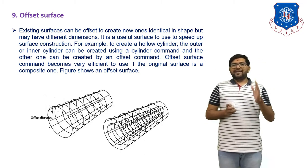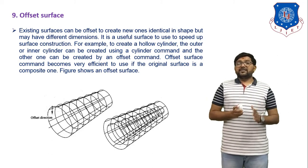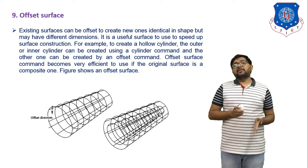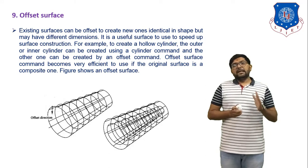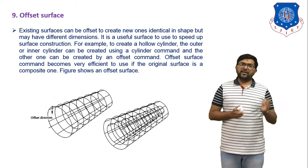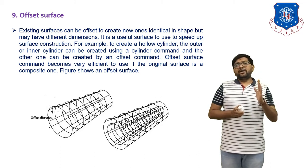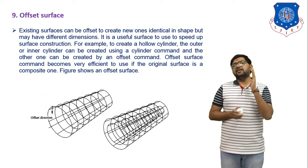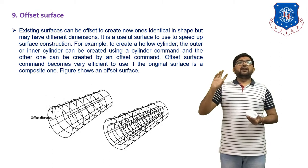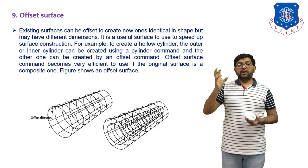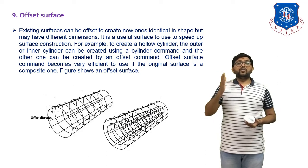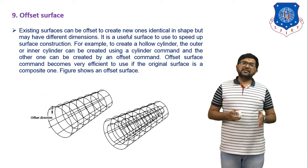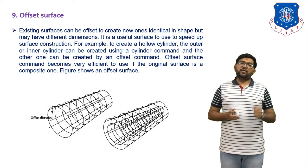In today's session we discussed a total of 9 types of surfaces. The first 4 — plane surface, ruled surface, surface of revolution, and tabulated cylinder — are analytical surfaces. The remaining ones — Bezier surface, B-spline surface, Coons patch, fillet surface, and offset surface — are considered synthetic surfaces. All these surfaces are used in 3D modeling. In the next session we will discuss one more topic of this chapter. Thank you.